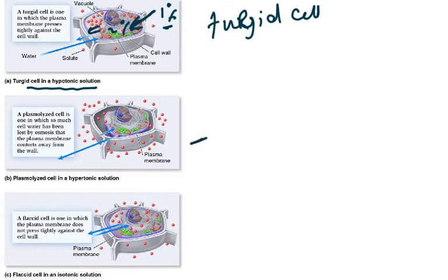In a hypertonic solution, the outside concentration is higher — hyper means more. A plasmolyzed cell is one in which so much water has been lost by osmosis that the plasma membrane contorts away from the cell wall — it moves away from the cell wall. You can see the cell membrane is now inside, pulled away from the cell wall.